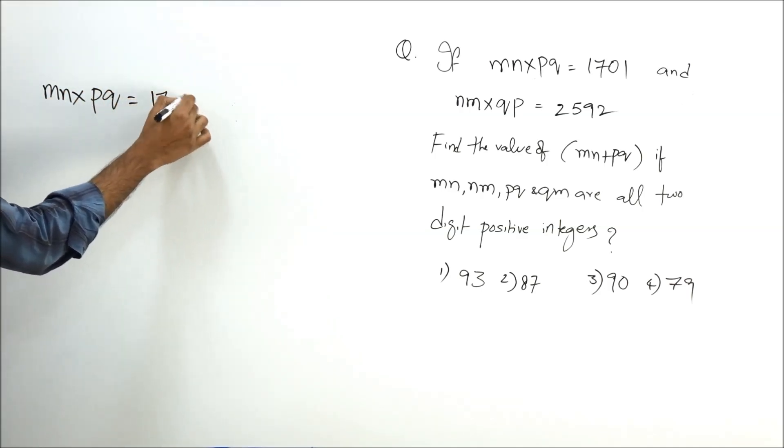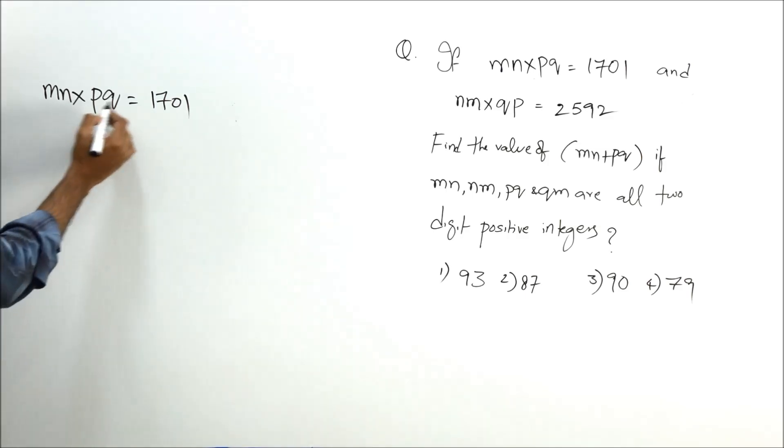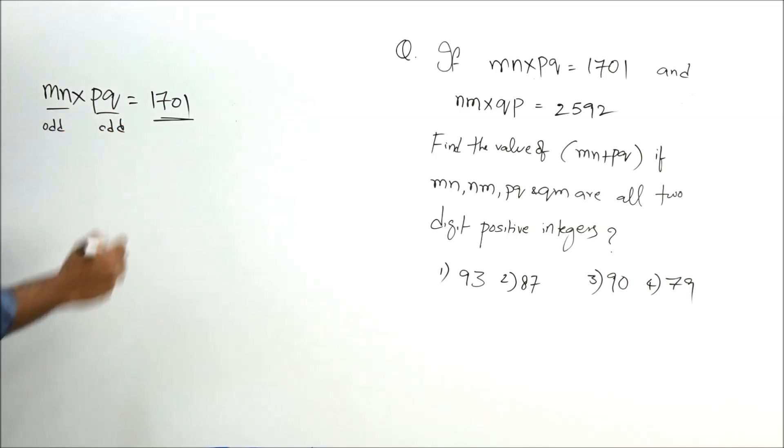If you look at the question, it's saying MN × PQ = 1701. So if the resultant is odd, can I say these both numbers should be odd? Otherwise, you can't get an odd resultant because odd × odd only gives you odd. In all other cases, we only get even results.